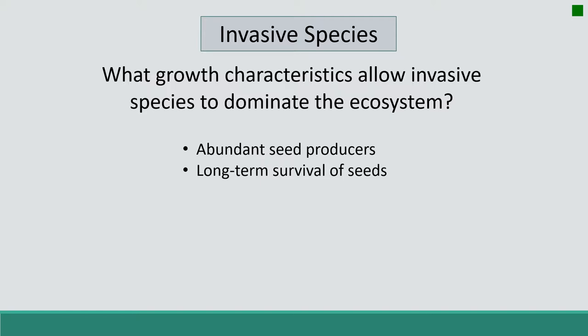Invasive species also have long-term seed survival. Leafy spurge, for example, can have a viable seed for up to eight years. Sagebrush, a species that we actually want, typically has a viable seed for only one to two years, if we're lucky.